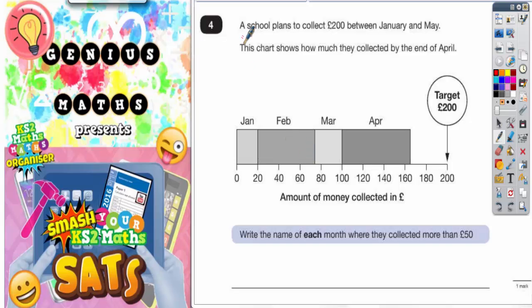Question number four. A school plans to collect £200 between January and May. This chart shows how much they collected by the end of April and the target was £200. Write the name of each month where they collected more than £50.